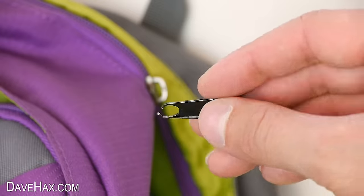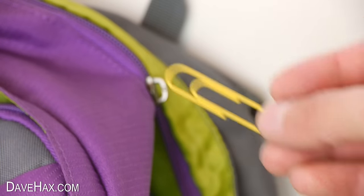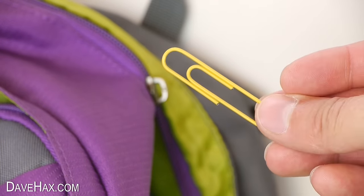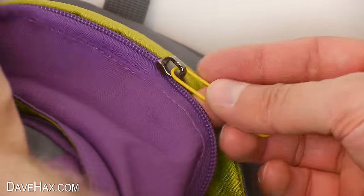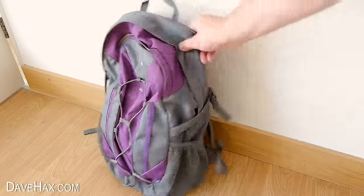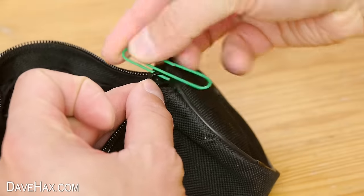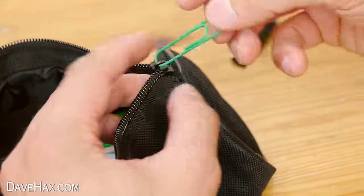If your zip breaks when you're doing up your bag, you can use a paper clip to replace it. Just thread it through for an instant DIY handle. You might also find this useful for a pencil case or even a jacket.